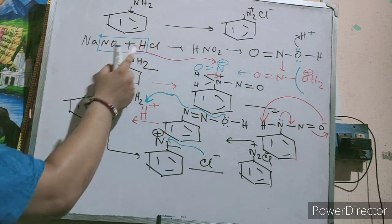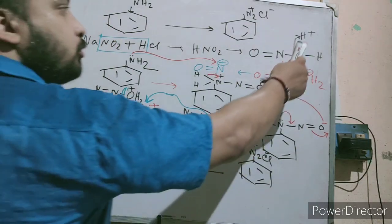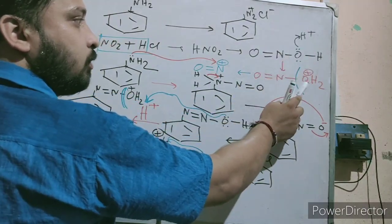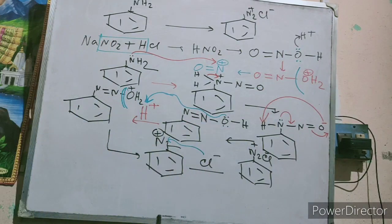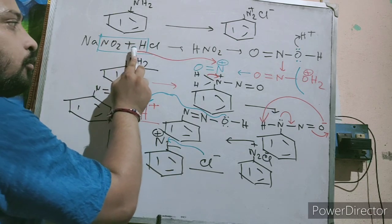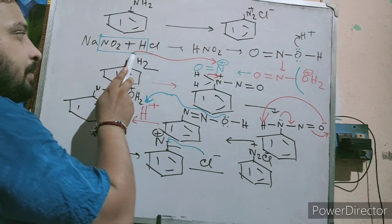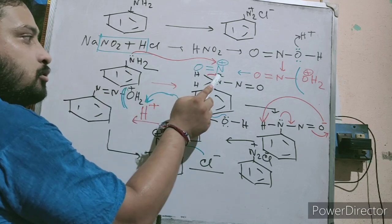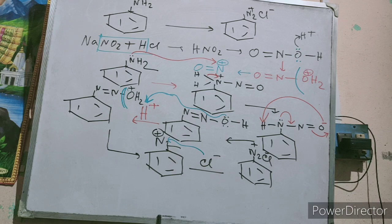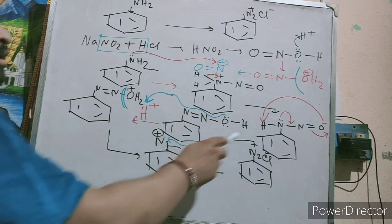To recap: you have aniline and you want to prepare benzene diazonium chloride. NaNO2 and HCl form HNO2. Write HNO2 in this structure, then protonate it — oxygen donates its lone pair so you get OH2. H2O is a good leaving group, so it removes, and N gives you a positive charge NO+. Take aniline — its lone pair attacks the positive NO+.